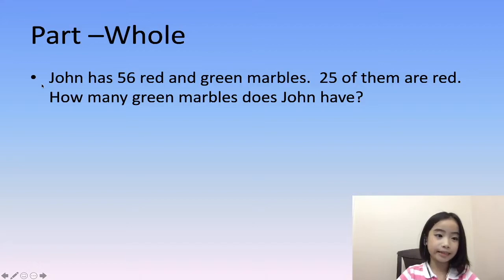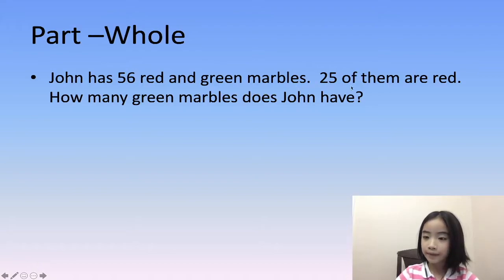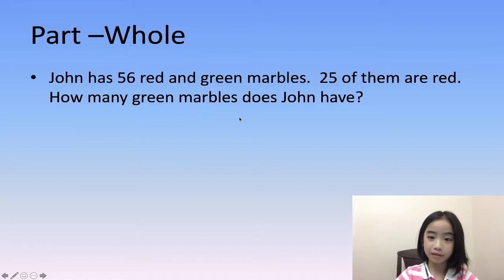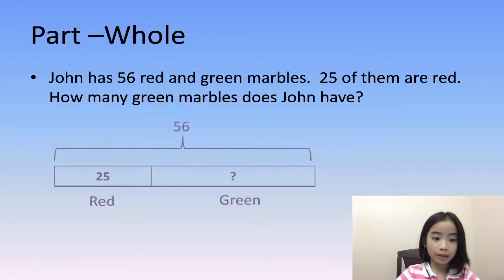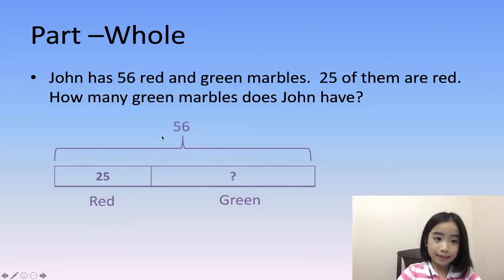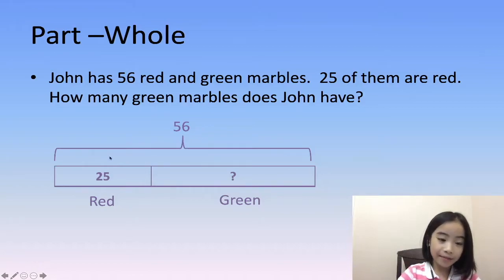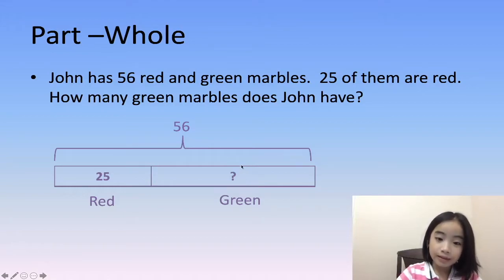The example is: John has 56 red and green marbles. 25 of them are red. How many green marbles does John have? So the whole is 56 and part of them is 25. We need to figure out how many are green — that is the question mark here.